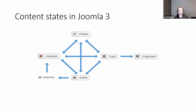In each of those states, you can go from one state to another — so if you're in publish, you can go straight to archive; if you're in unpublish, you can go to trash. They all move directly to each other. You can unarchive something that's been archived, and when you've trashed something, you can empty the trash to permanently delete it.